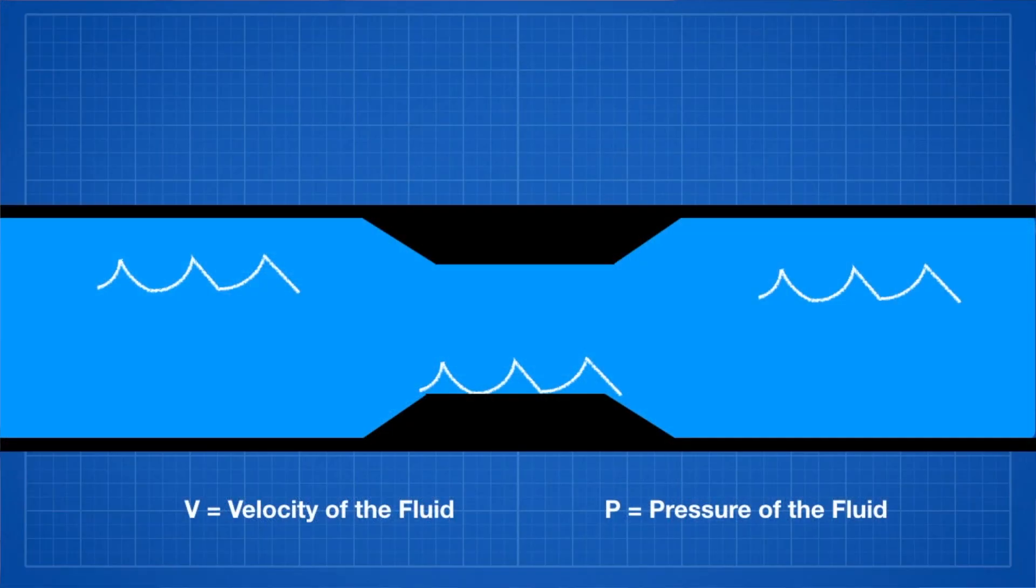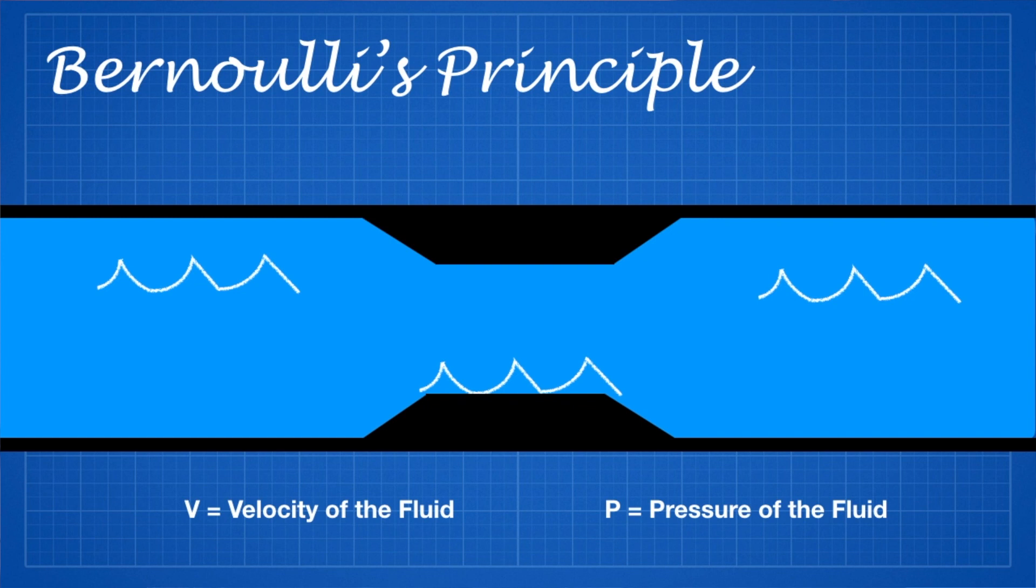One of the most important concepts for the production of lift comes from a 1700s Swiss mathematician and physicist named Daniel Bernoulli. He's considered the father of fluid mechanics, and one of the things he studied way before we even started trying powered flight was the relationship between the velocity of a fluid and the pressure inside that fluid.